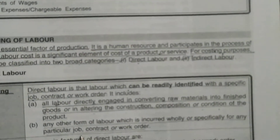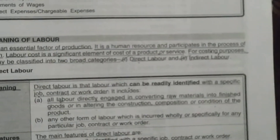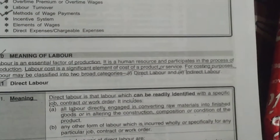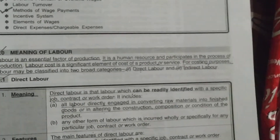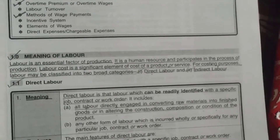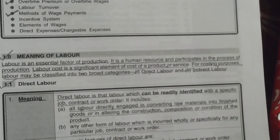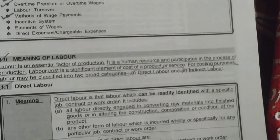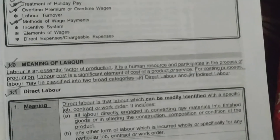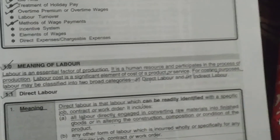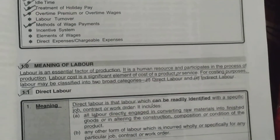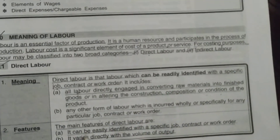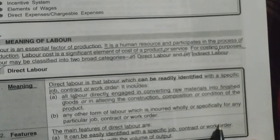Any person doing specifically assigned work is direct labor. For example, a laborer working in construction of a road, or workers in a bakery taking raw material like flour and making bakery items — those persons are called direct labor. The main features of direct labor are: it can be easily identified with a specific job, contract, or work order.